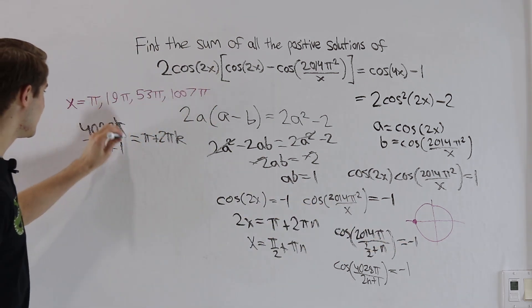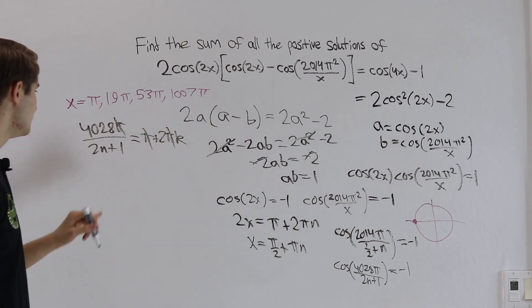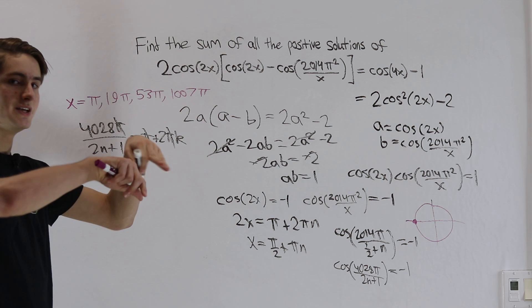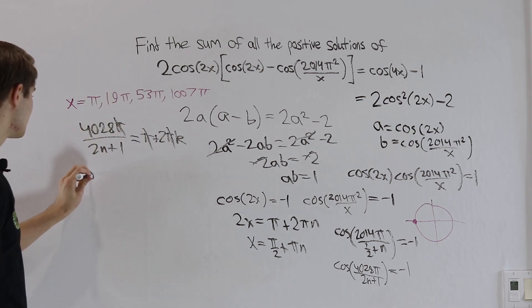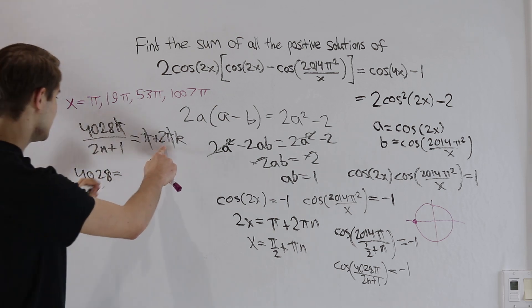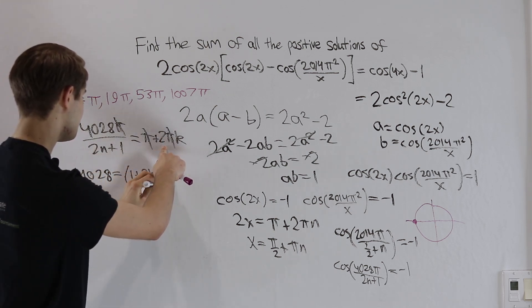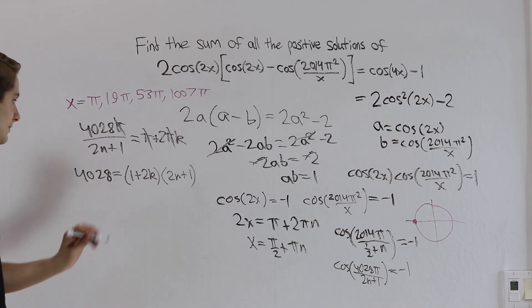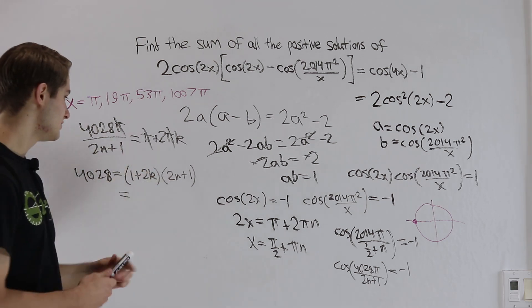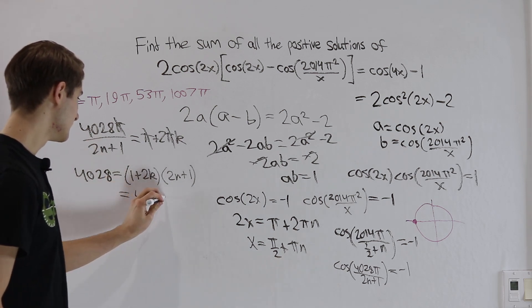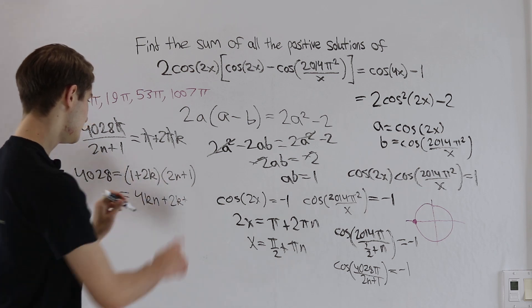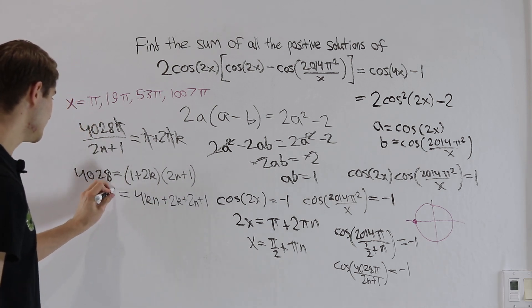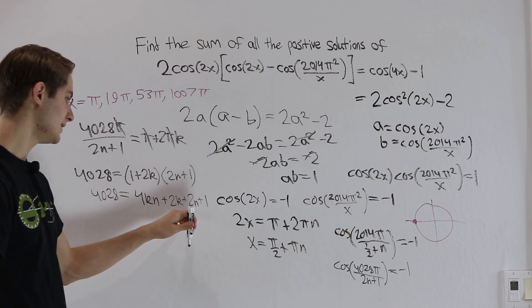And now in this case, notice the π's are going to cancel on both sides. What we should do is multiply by 2n plus 1 on both sides. That way we get the 4028 by itself, everything's in the numerator, so it's a little nicer. That'll leave us with 4028 is equal to, on the right side we have 1 plus 2k. And on the left side, when we multiply that over, we're going to have 2n plus 1. Now let's look at what happens when we expand out what we have on the right. 2k times 2n is going to give us 4kn. Then we have plus 2k times 1 is 2k, 2n times 1 is 2n and 1 times 1 is 1. So 4028 equals 4kn plus 2k plus 2n plus 1.